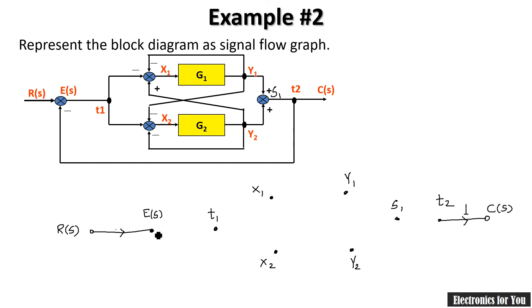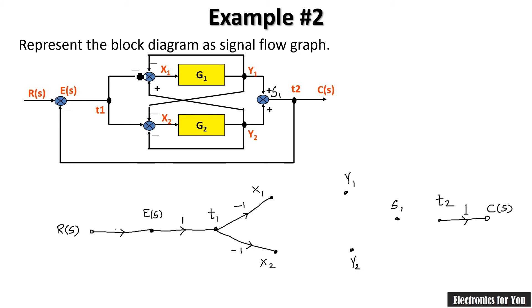Now let's connect them. E(s) and T1 are connected with no block in between, so the gain is one. T1 is connected to X1 with a negative sign, so the gain is minus one. Similarly, T1 and X2 are connected with minus one. Between X1 and Y1 there is a block G1, so the gain is G1.